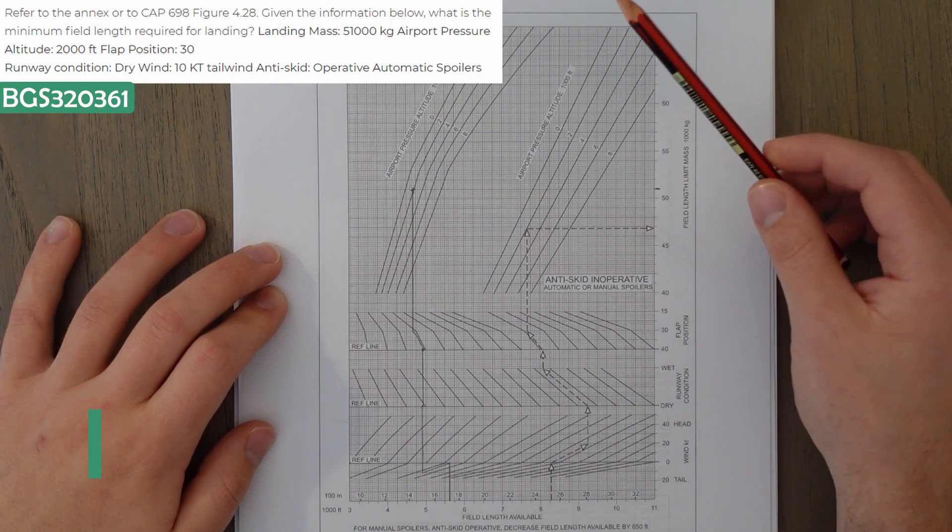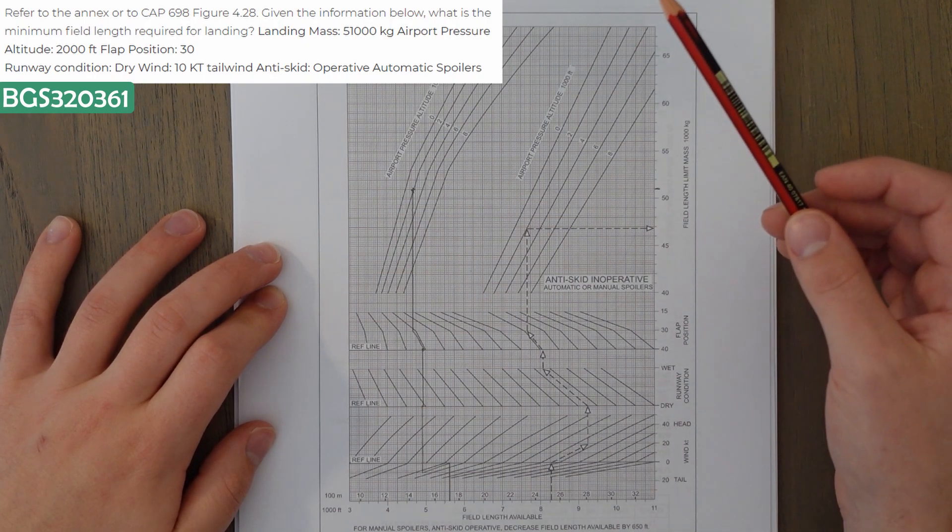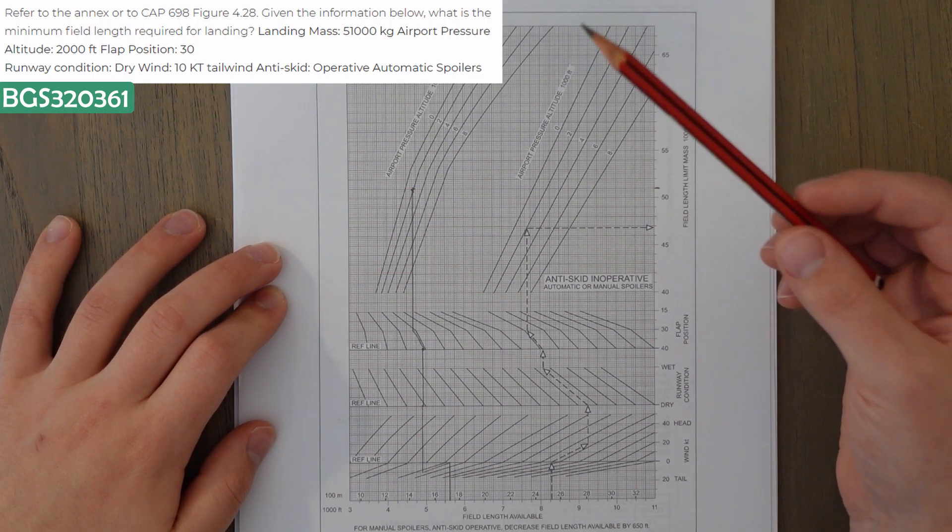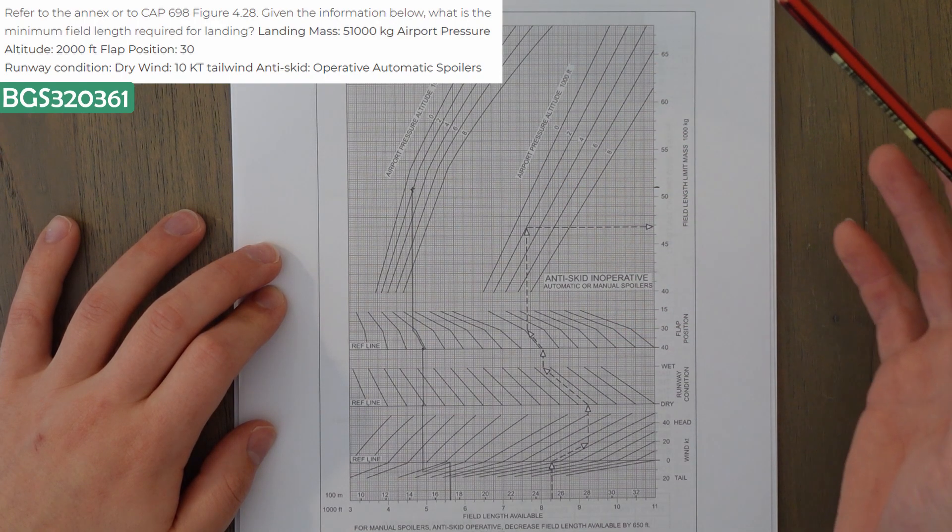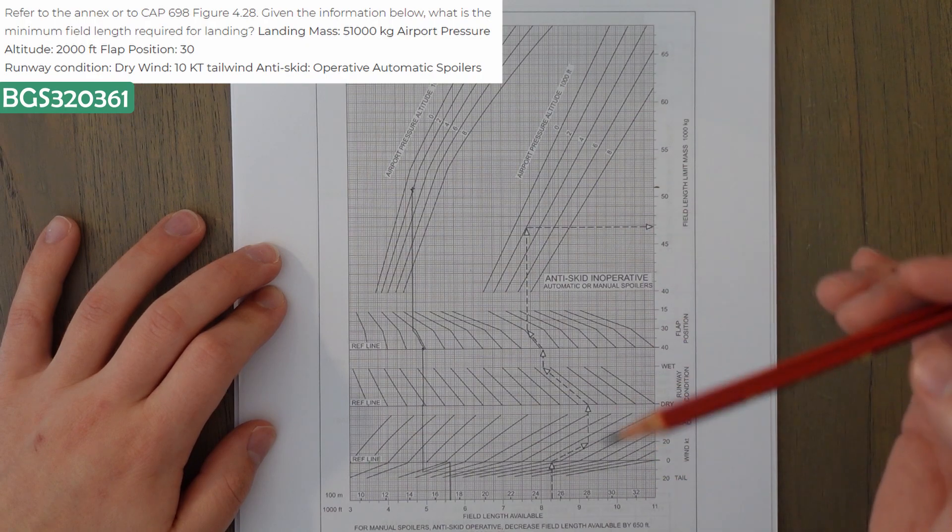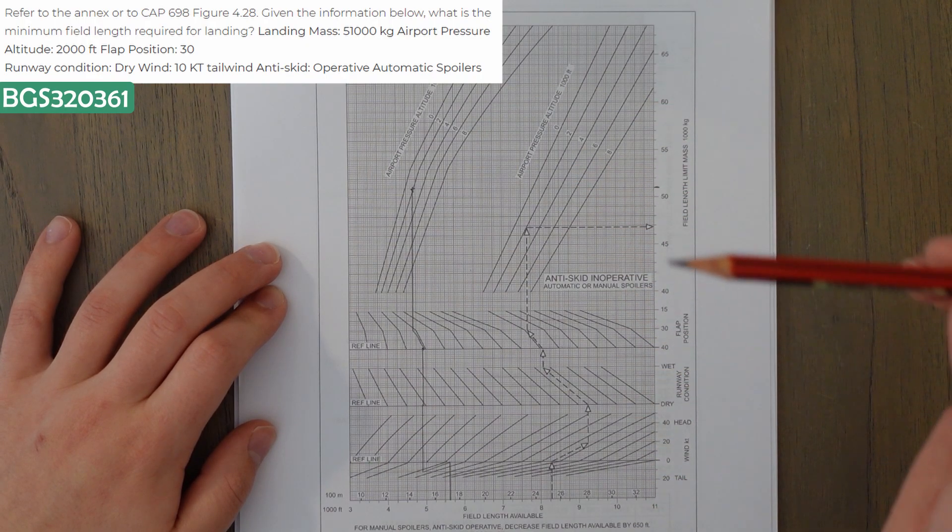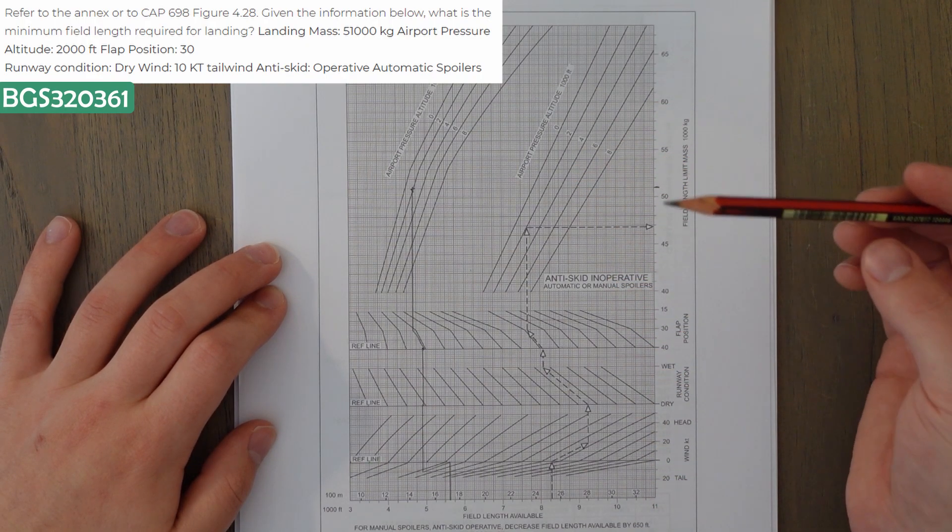In this first question, we're trying to find out the landing distance required for the medium-range jet transport Class A aircraft with the following information. Landing mass 51,000, pressure altitude 2,000, flaps 30, dry runway, 10 knots, and automatic spoilers, and a working anti-skid system.